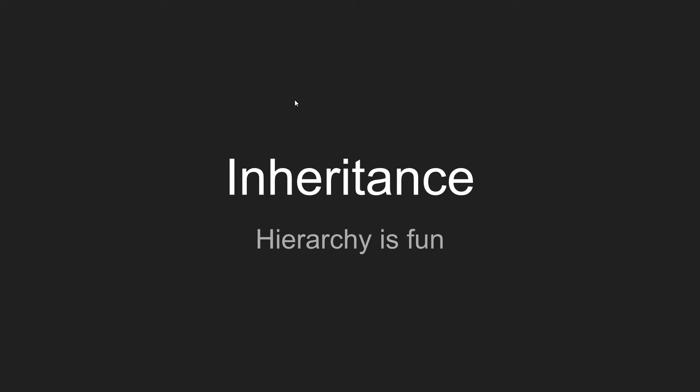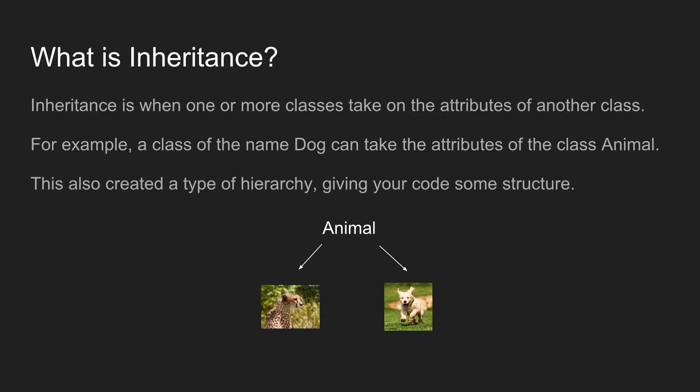Hey, what's up guys, back with another video. This episode I'll be teaching you about inheritance in classes — how it works and how to use it. Inheritance is when one or more classes take on the attributes of another class. For example, you have a class called Dog and you give it the attributes of the Animal class. That makes sense because animals all have something in common, but dogs and cats have specific things the other doesn't.